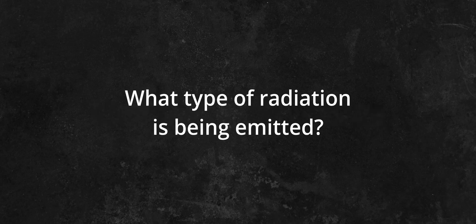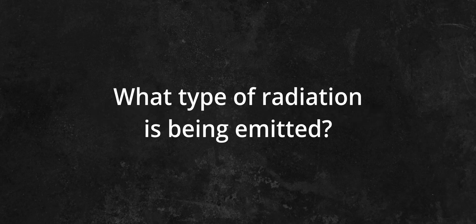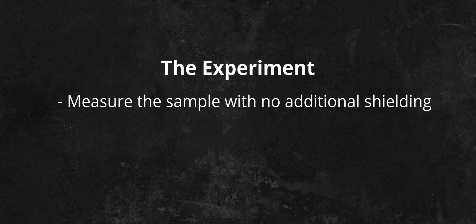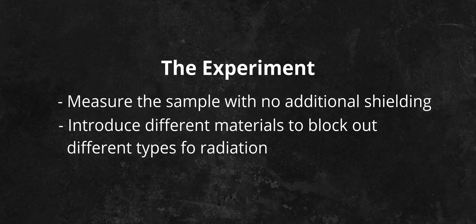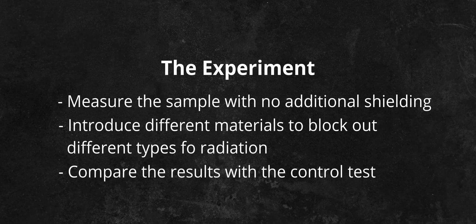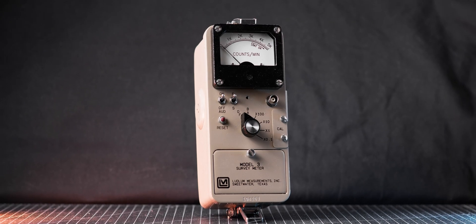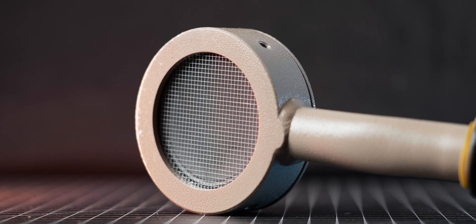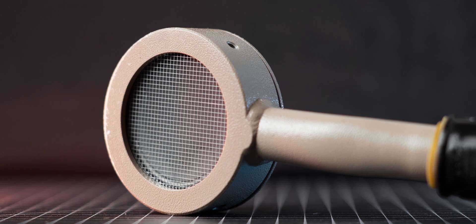I'll start by checking what type of radiation is being emitted from the container. First, I'm going to take a measurement without any shielding, and then I'll start introducing different materials to block out different types of radiation and compare the results. For this purpose, I will use my Ludlum Model 3 with a 44-9 probe as it can easily detect alpha, beta, and gamma radiation.